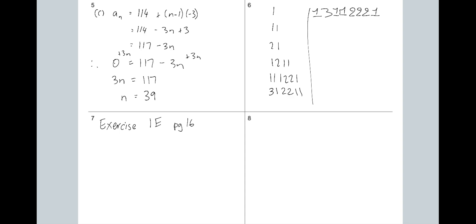Exercise 1E on page 16 — I want you to do all of that. If you look at it and think it's a bridge too far, the optional one is to go back and start with exercise 1D, which has more straightforward 'here is a sequence, work it out' questions. Exercise 1E is more like word problems — treat it like a sequence and work it out. Most of you are ready for 1E, but if you're not, go for 1D first.